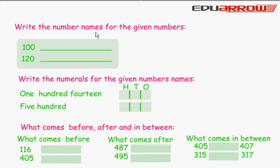Write the number names for the given numbers. We will learn here the number name of three digits. 100 - We write here one hundred.